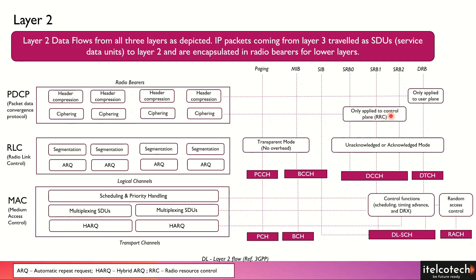The information belonging to the signaling part needs to be secured, so PDCP performs ciphering for the control plane. For data information coming as Data Radio Bearers, more header compression is done so that more resources are available for actual data. Those information bits are compressed by PDCP. Next to PDCP is the RLC, which is the Radio Link Control.